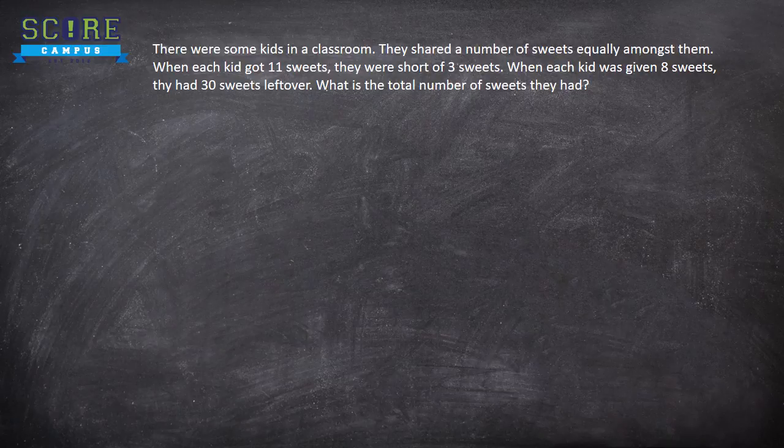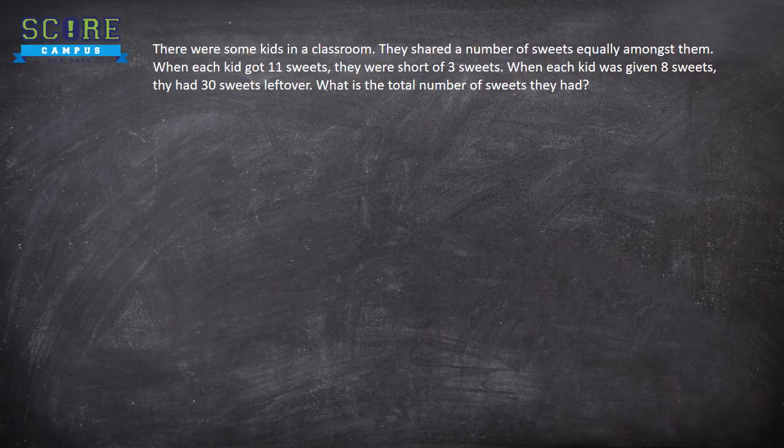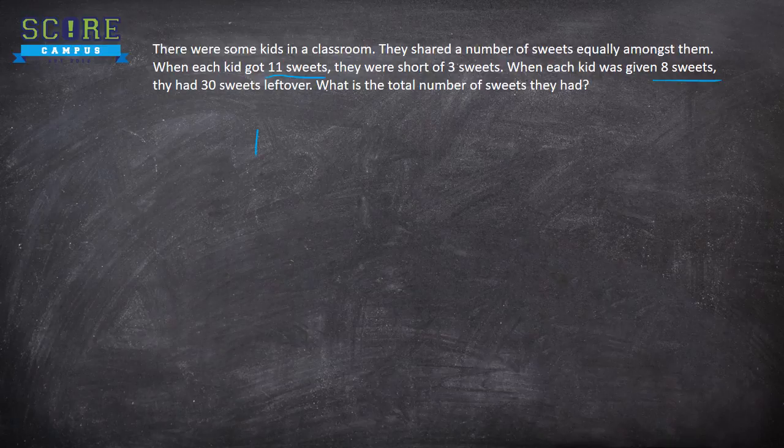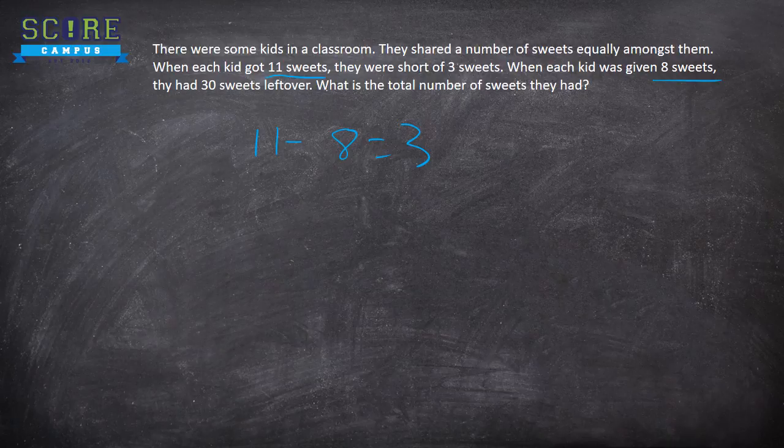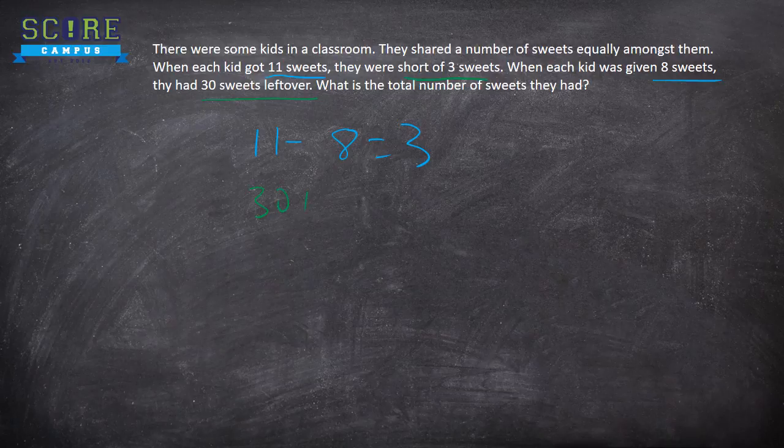So first thing you need to do is, this is a step-by-step approach. Take 11 sweets minus 8 sweets. First step. Now, second step. Short of 3 sweets, 30 sweets left over, add 33.